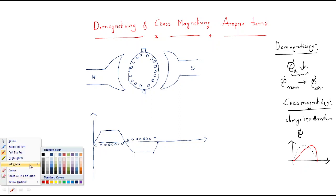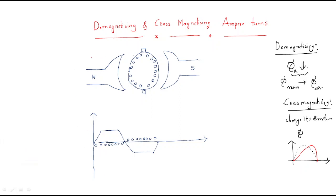Now we will analyze in detail what happens inside. We have two poles: one north pole and one south pole. This is the brush axis — the normal brush axis. Generally, brushes will be shifted to a certain position. Due to this shift, the brush axis will vary accordingly — the straight line will be varied.